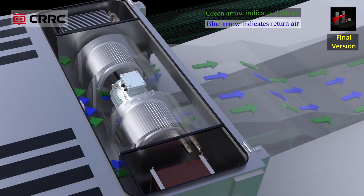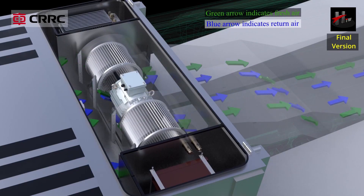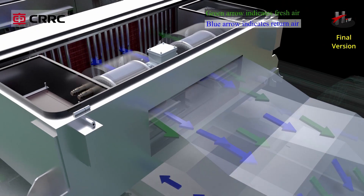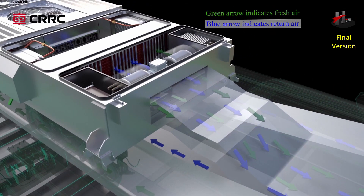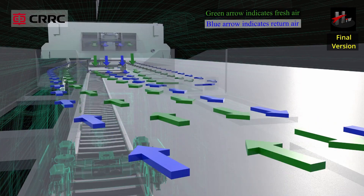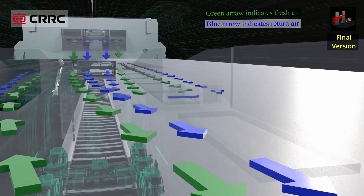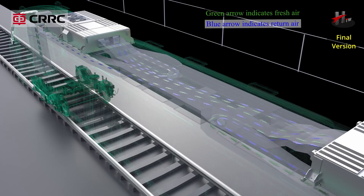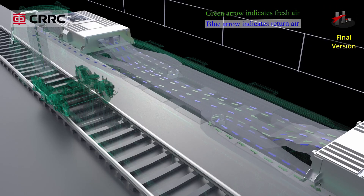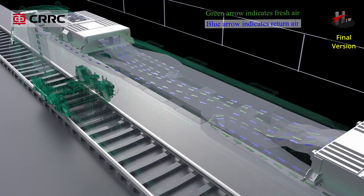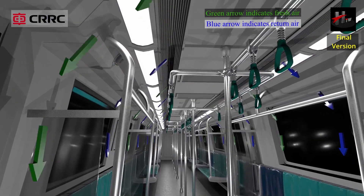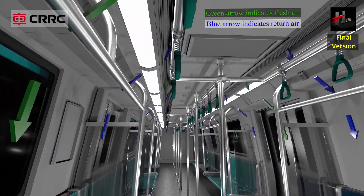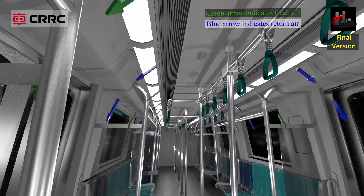This mix of the fresh and return air is discharged from the supply air opening into the supply air duct installed above the ceiling of the passenger saloon. The mixed air enters the saloon through the diffusers located on the ceiling.